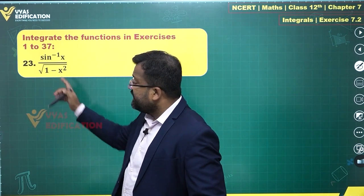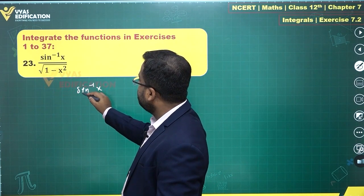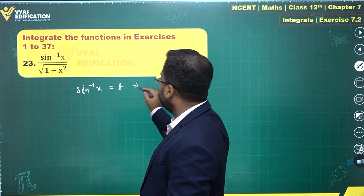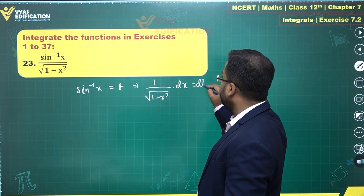But the derivative of sine inverse x is this. So we can assume sine inverse x equal to t, which gives me 1 upon root 1 minus x square dx is equal to dt.